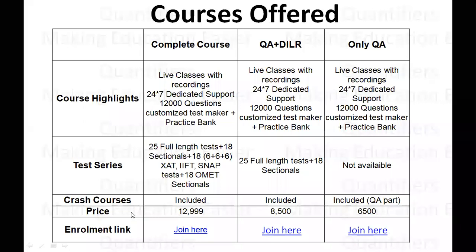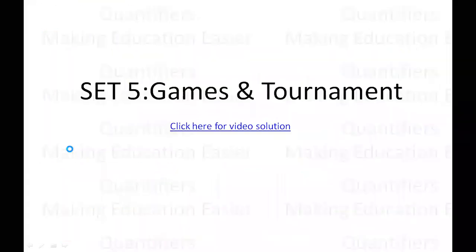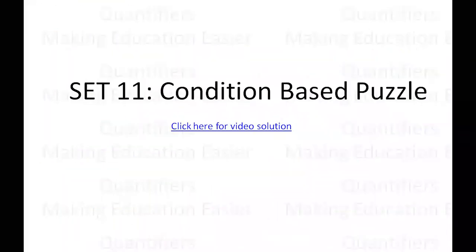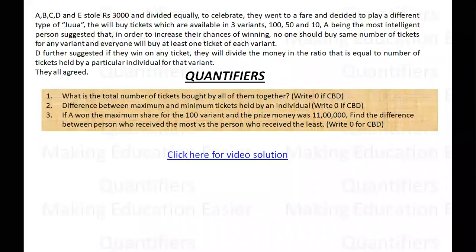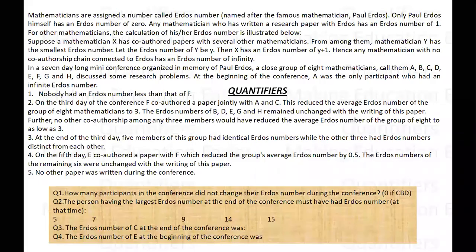We have covered a lot of sets as of now — 16 to be precise — and this is our 17th set in the series. It is a past CAT set based on the Erdős number, so a pretty interesting set. Let's see what it has to tell us and how we should proceed.